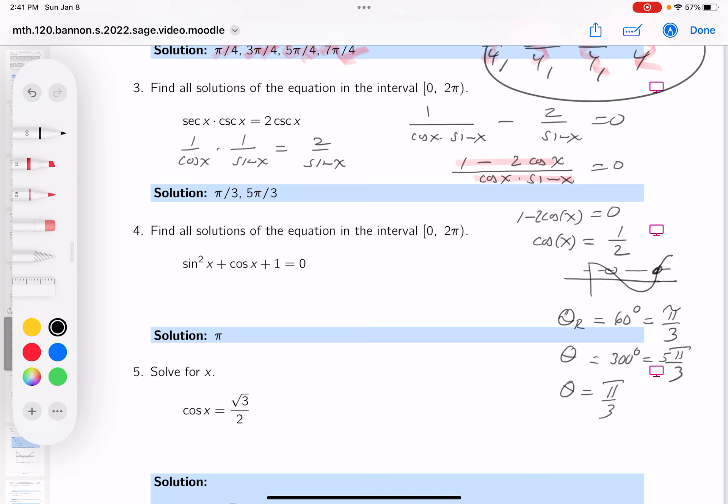So I have my two answers. Let's write those down. Pi over 3 and 5 pi over 3. Let's see if they got those answers. They do. Pi over 3 and 5 pi over 3. Thank you.